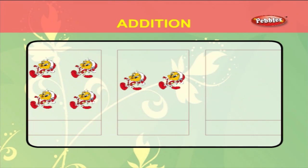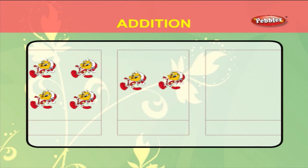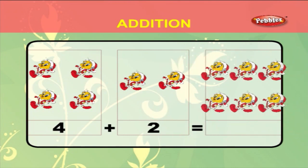Take the next example. There are 1, 2, 3, 4 tweety birds in the first box and 1, 2 tweety birds in the second box. 4 plus 2 is equal to 6.